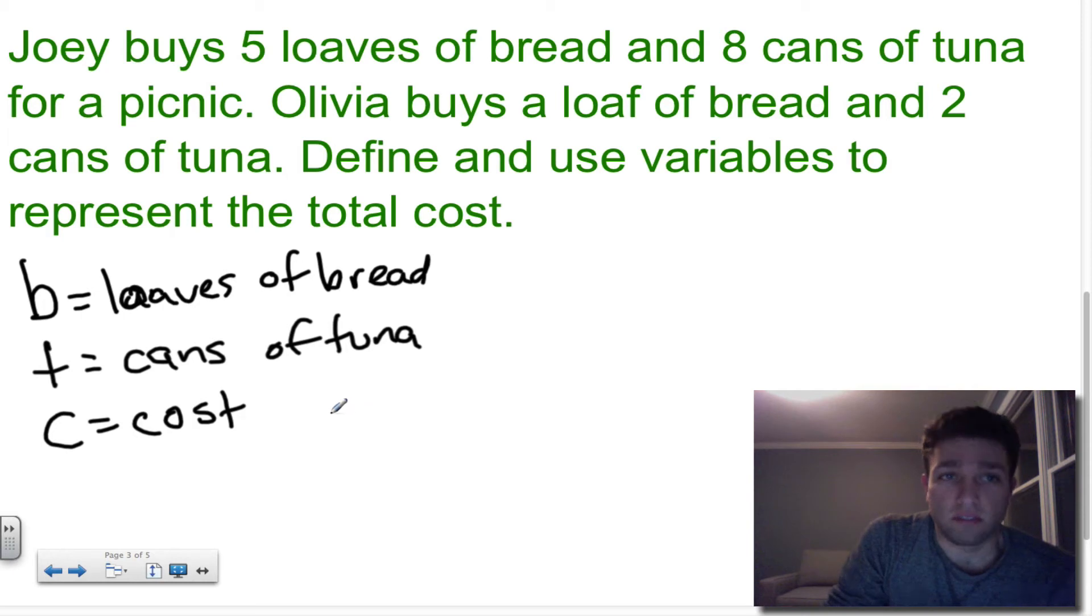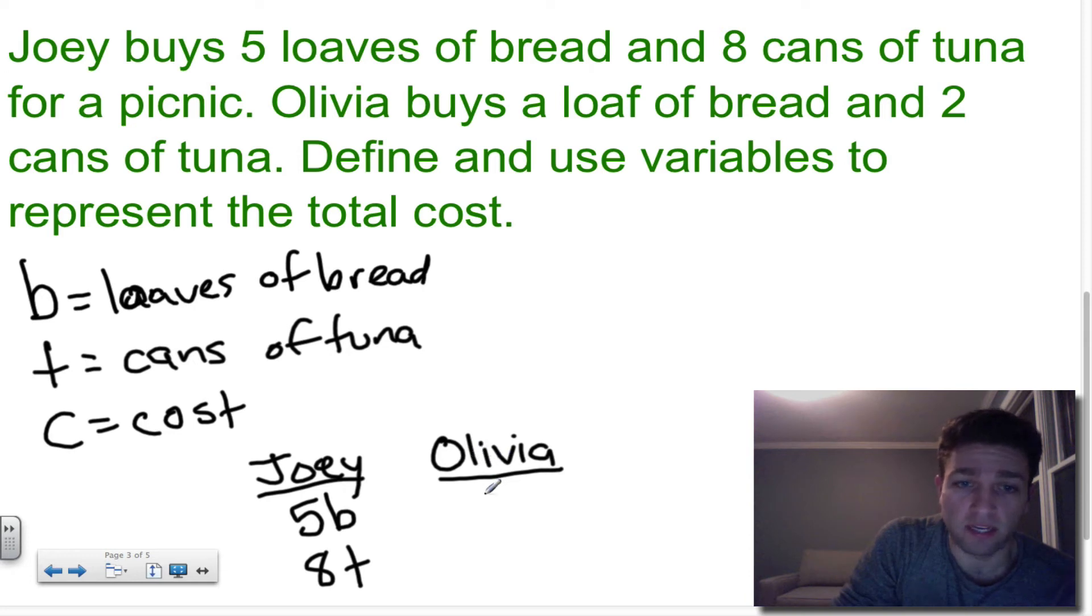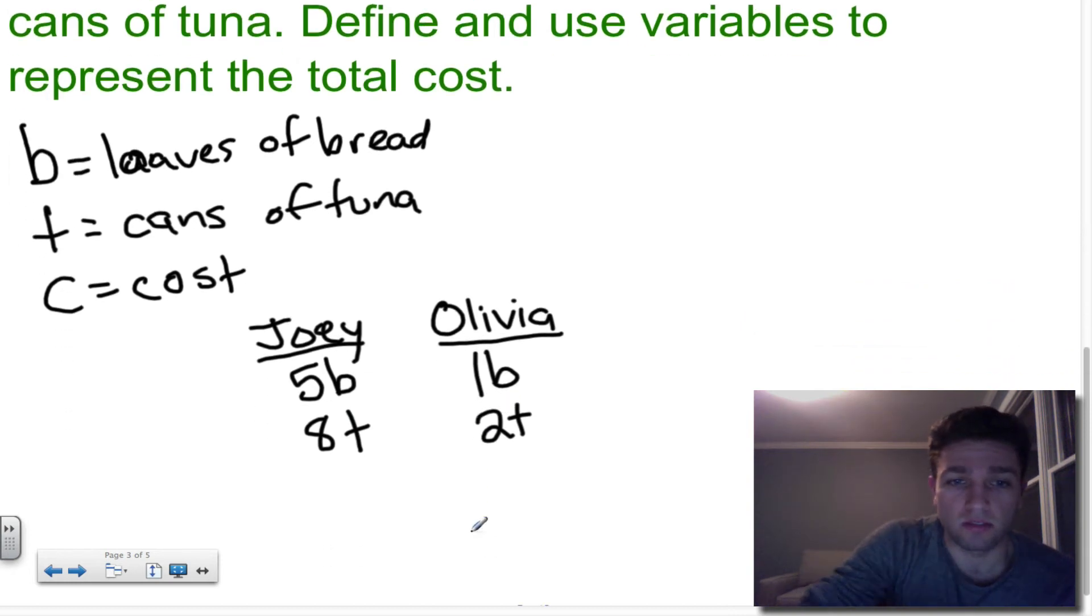Now in this problem, I have two different pieces. I've got Joey and I've got Olivia. And they have two different amounts of things. So let's start with Joey. Joey has five loaves of bread, which we could represent as 5b. And he also has eight cans of tuna, which I'm going to represent with 8t. And if we move to Olivia, she has a loaf of bread. So you can either represent that as b, or if you like seeing the number, there's 1 in front of it, so 1b. And she also had two cans of tuna. Now, each of these things cost something, and that's what this variable is representing.